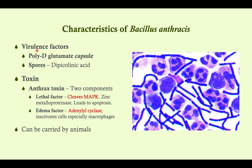The virulence factors we already talked about: it's got a poly-D-glutamate capsule — very unique — and they form spores. All endospores have what's called dipicolinic acid. I didn't include that when we talked about the notorious spore-forming Clostridium species, but you should put this also in your back pocket. Dipicolinic acid is a component of spores, because that might come up.